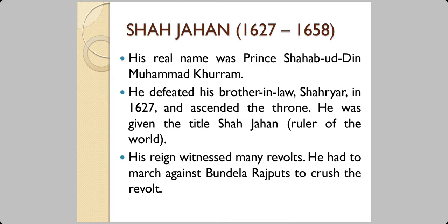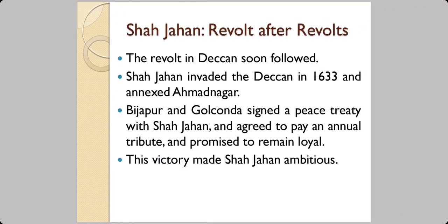Shah Jahan's reign witnessed many revolts and he had to march against the Bundela Rajputs to crush them. The revolt in the Deccan soon followed, and Shah Jahan invaded Deccan in 1633, taking over Ahmadnagar. Vijayapur and Golconda were two important centers — Vijayapur is in Karnataka today and Golconda is near Hyderabad. The rulers of these two places signed a peace treaty with Shah Jahan, agreed to pay an annual tribute, and promised to remain loyal.